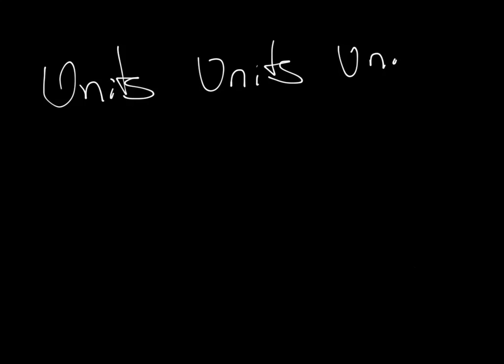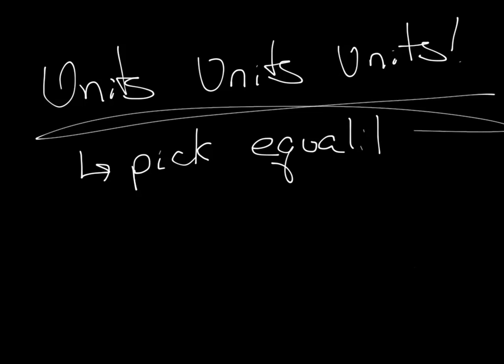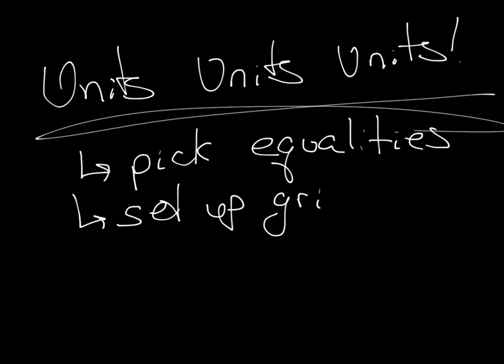That's really all there is to solving from molecule to mass or mass to molecule. It might feel complicated, but it's not that big of a deal. Units, units, units — watch your units. Use those units to pick your equalities: should you use 1 mole equals molar mass in grams, or 1 mole equals 6.022 times 10 to the 23rd atoms or molecules? Which order to use them? Use units to pick your equalities and to help set up the grid. It just takes some practice. Have a good one.